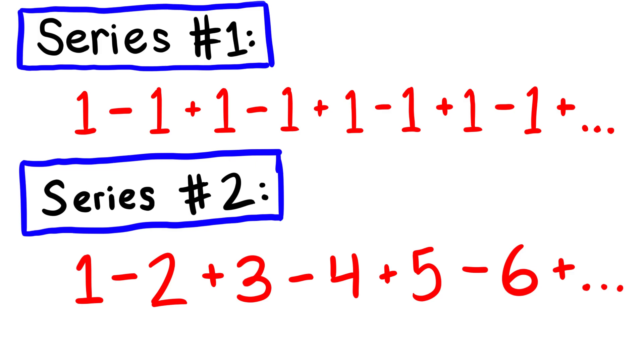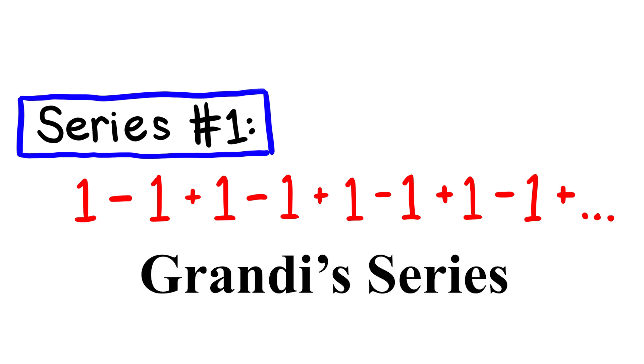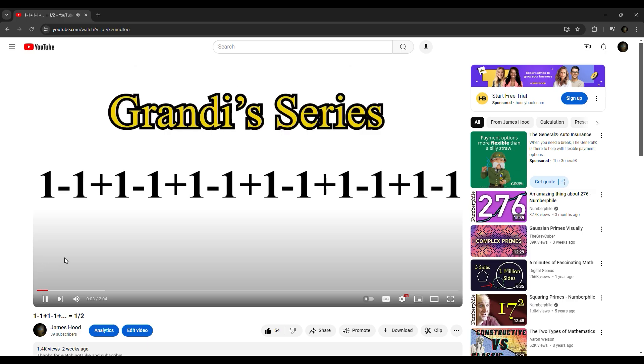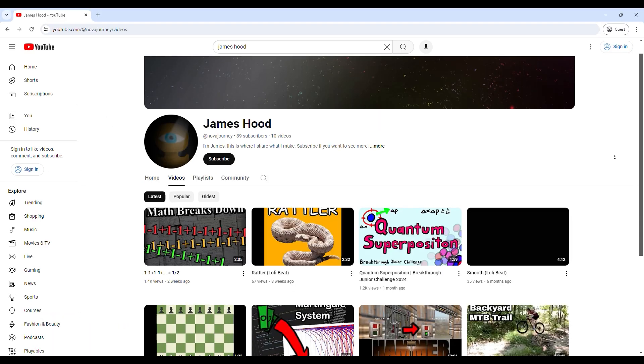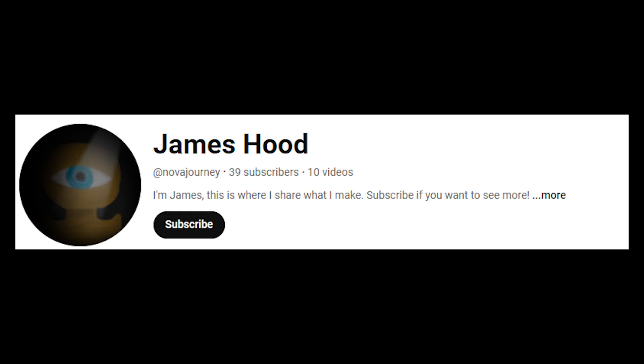First, we're going to need to find the sum of two other series to help us find our final sum. This first series is called Grandi series. Its sum is one half. You can find the sum after a fairly long proof, so I made a full video explaining how to find the sum that you can find in the description. By the way, if you want more videos like this, make sure to like and subscribe to my channel.